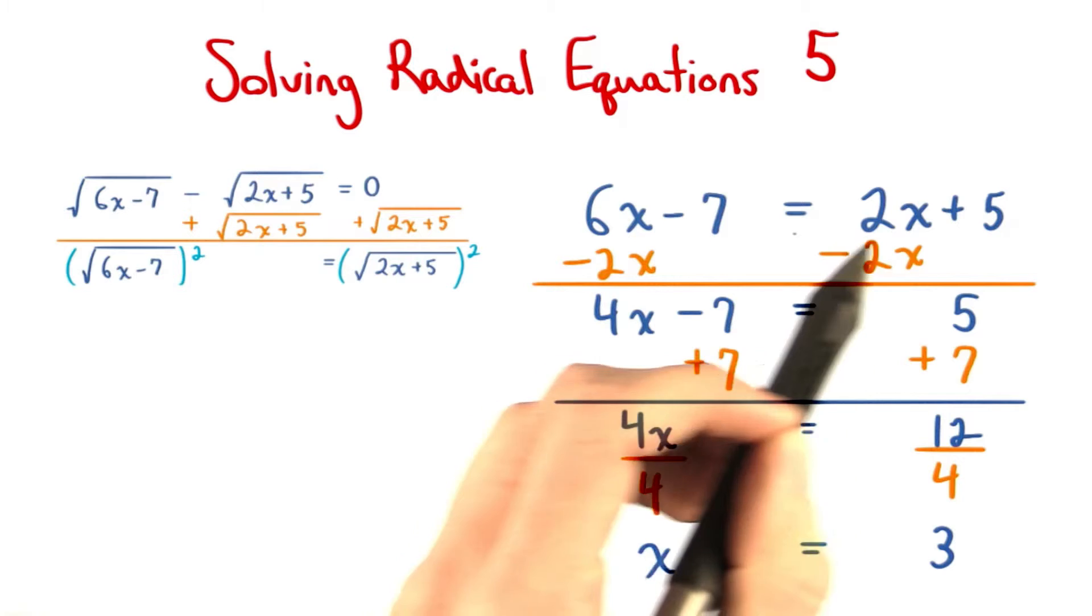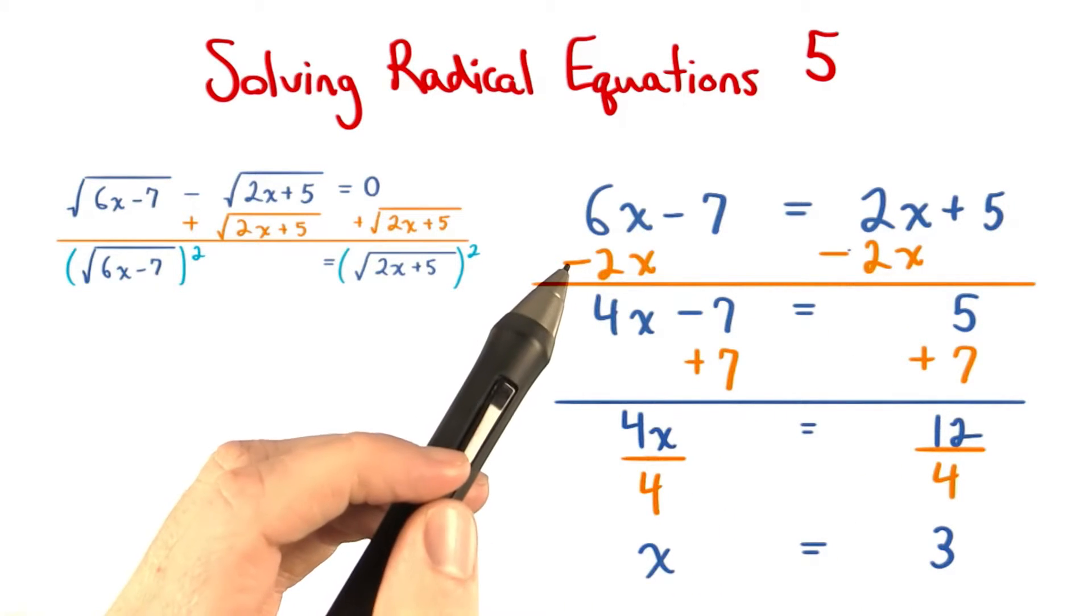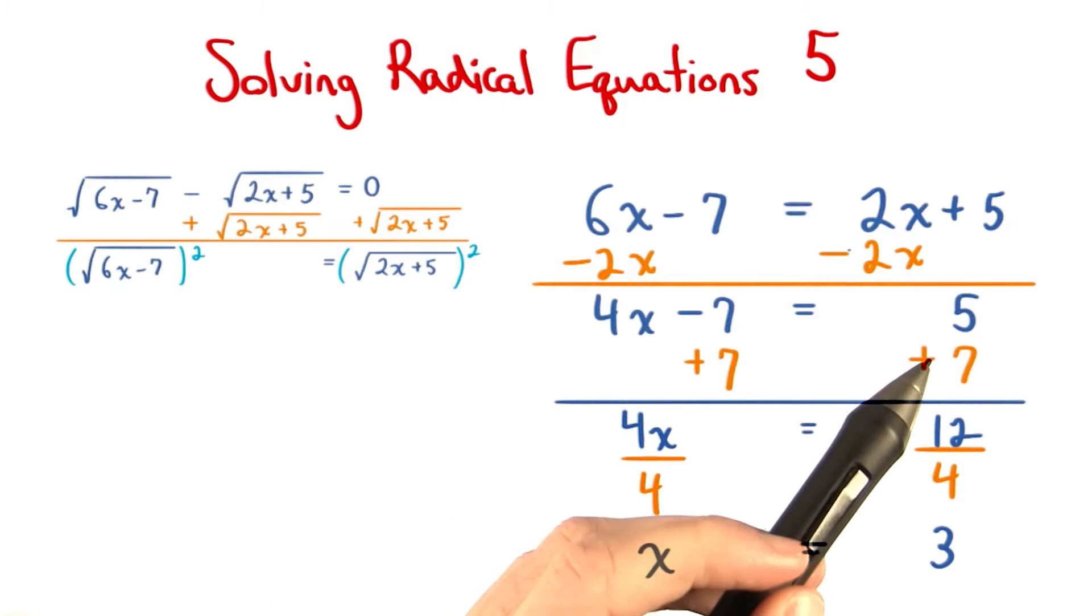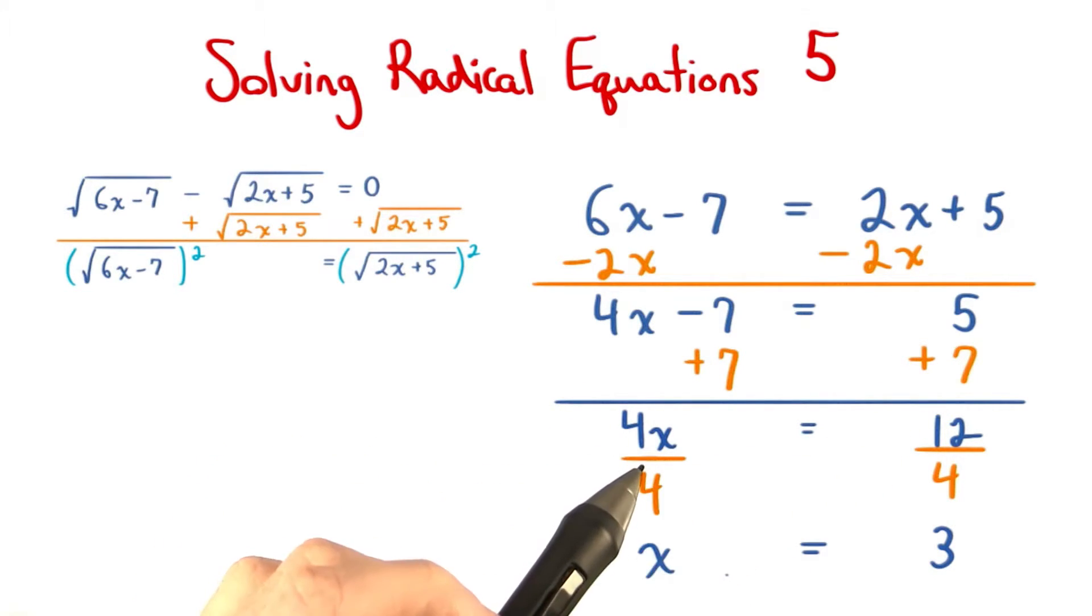Next, we just want to solve this linear equation for the value of x. So, we subtract 2x from both sides, and then add positive 7 to both sides. This will leave us with 4x equals 12, and then we divide both sides by 4 to get x equals 3.